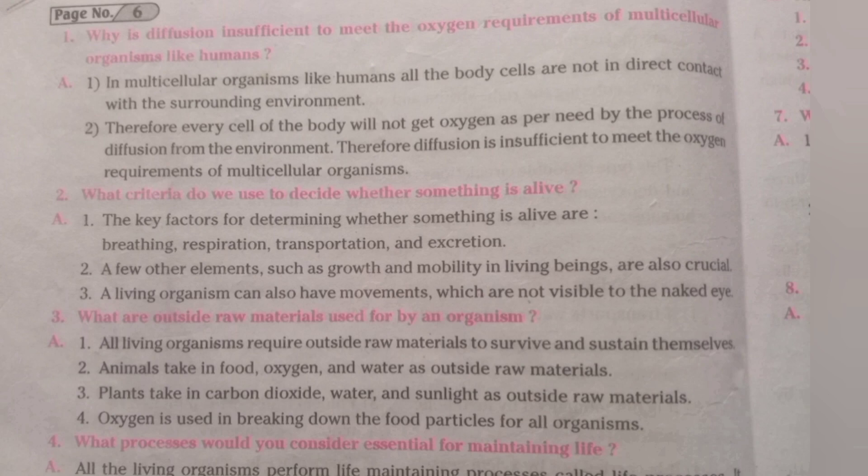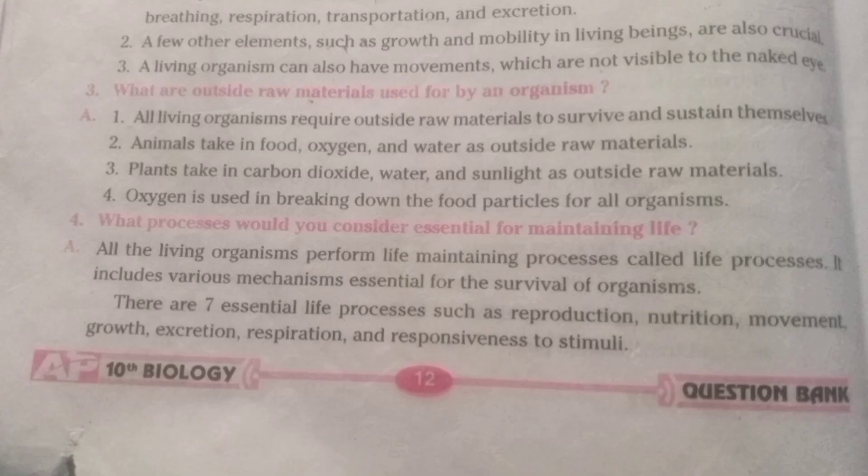What are outside raw materials used for by an organism? All living organisms require outside raw materials to survive and sustain themselves. Animals take in food, oxygen, and water as outside raw materials. Plants take in carbon dioxide, water, and sunlight as outside raw materials. Oxygen is used in breaking down the food particles for all organisms.